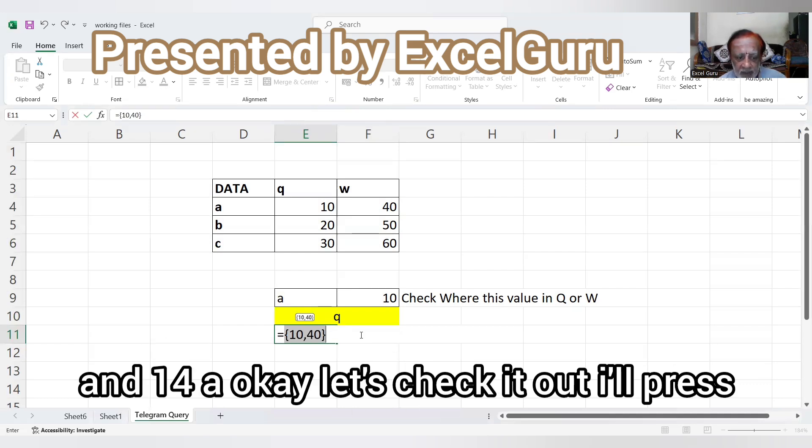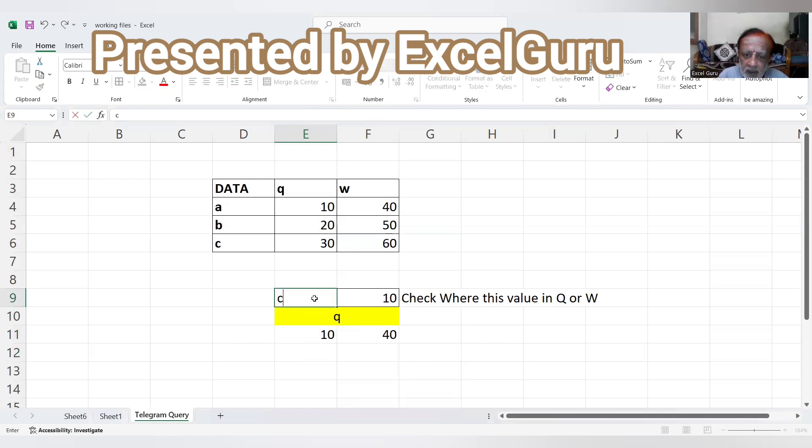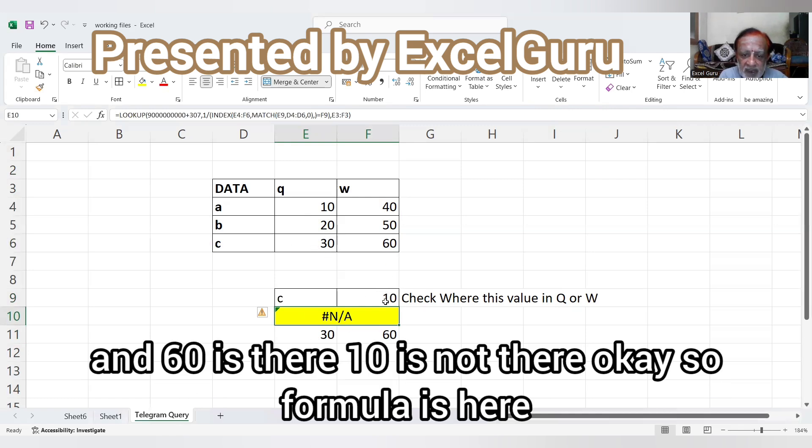Let's check it out. I'll press enter. Let's check it out. In place of C, what will happen? 10 is not available. It is showing 30 and 60 only.